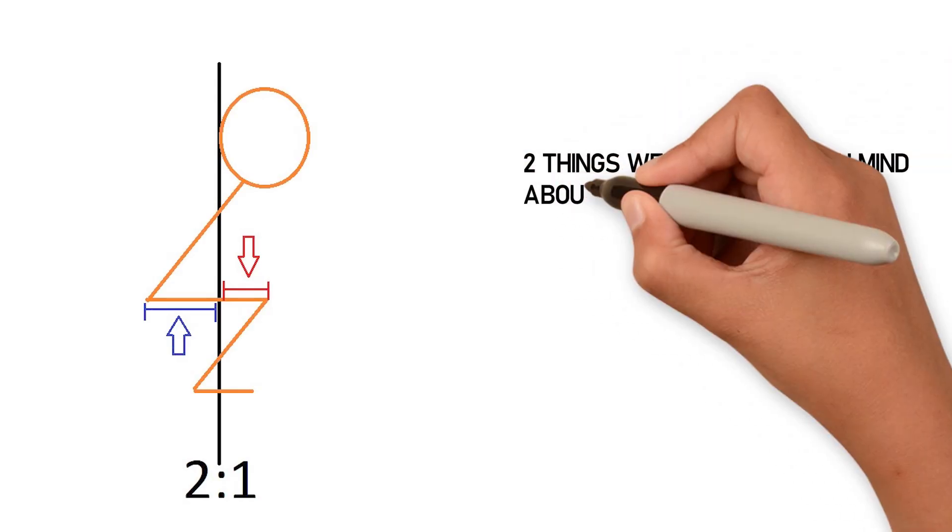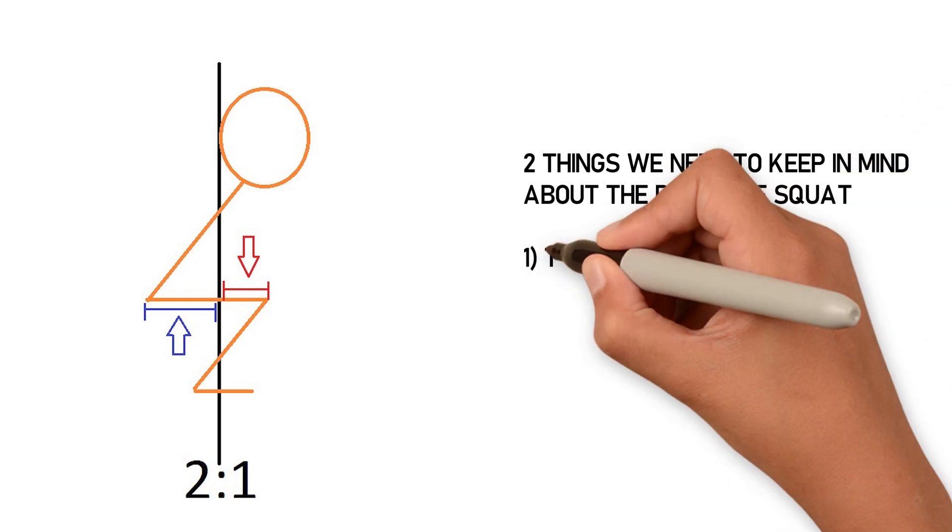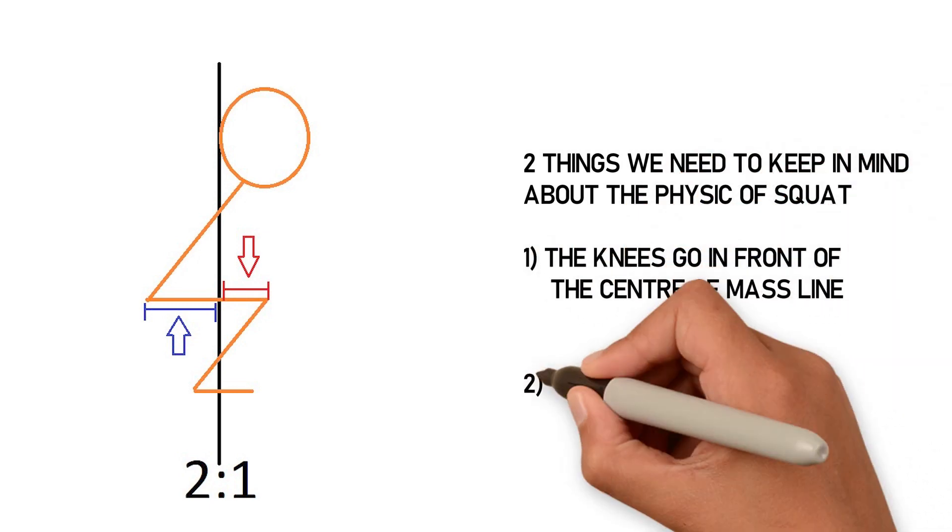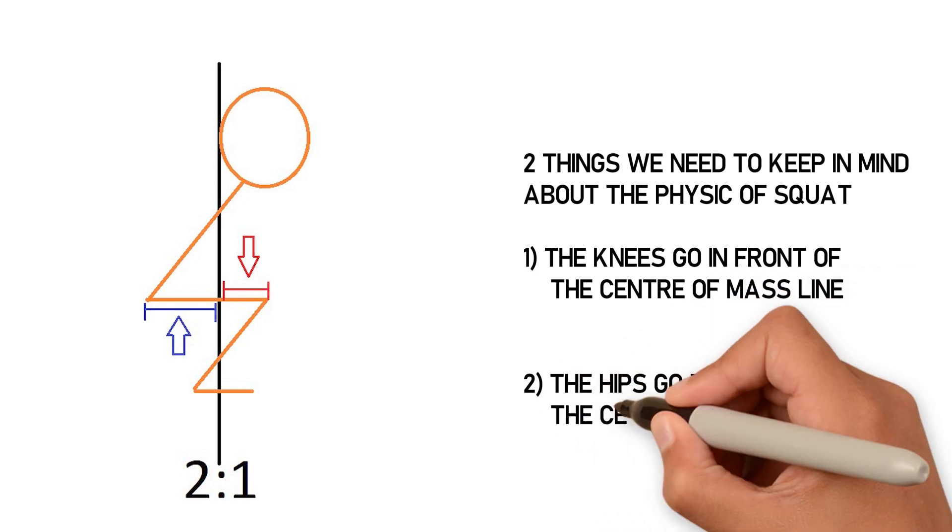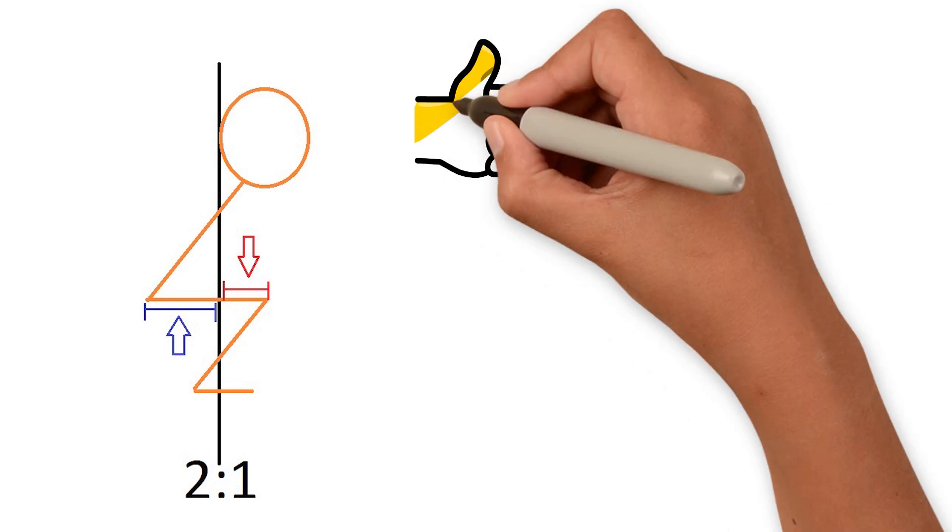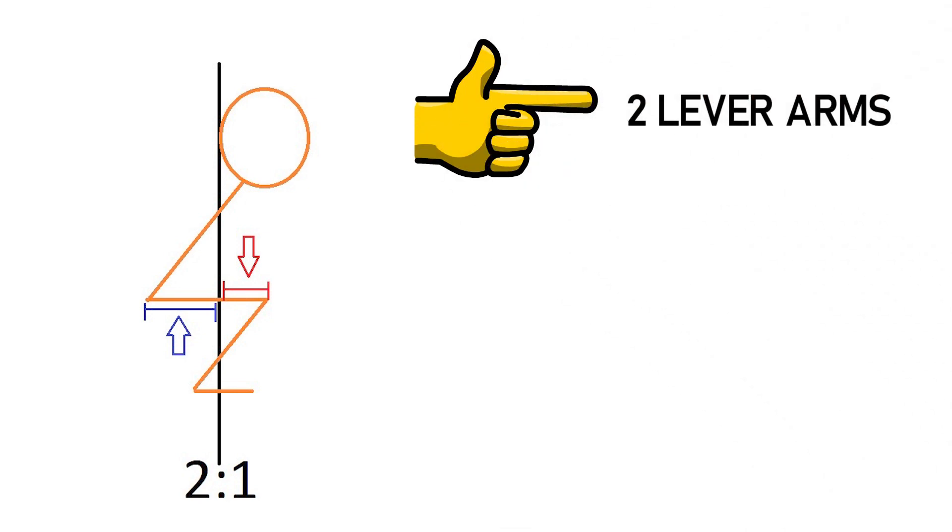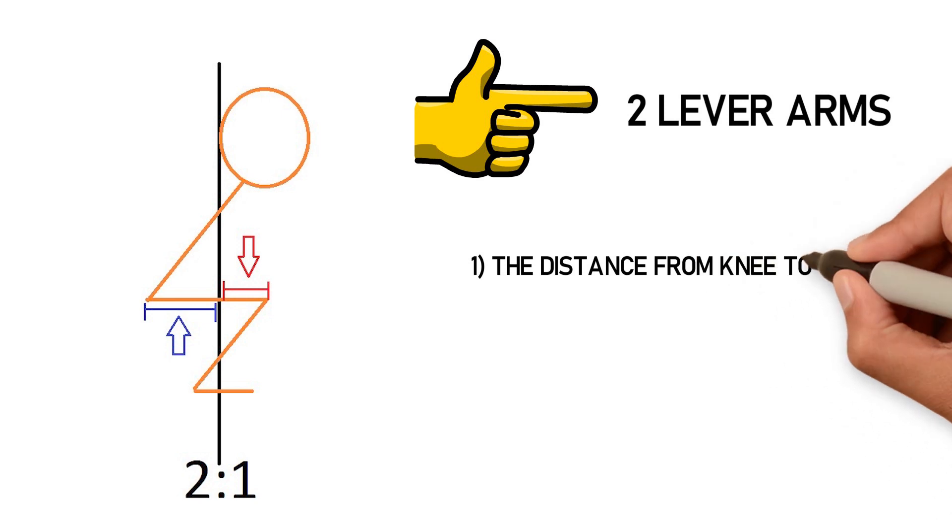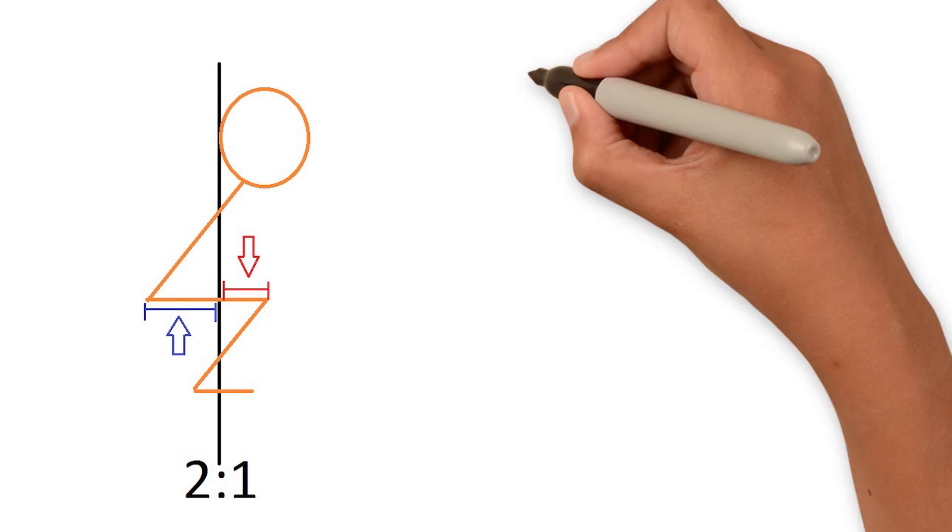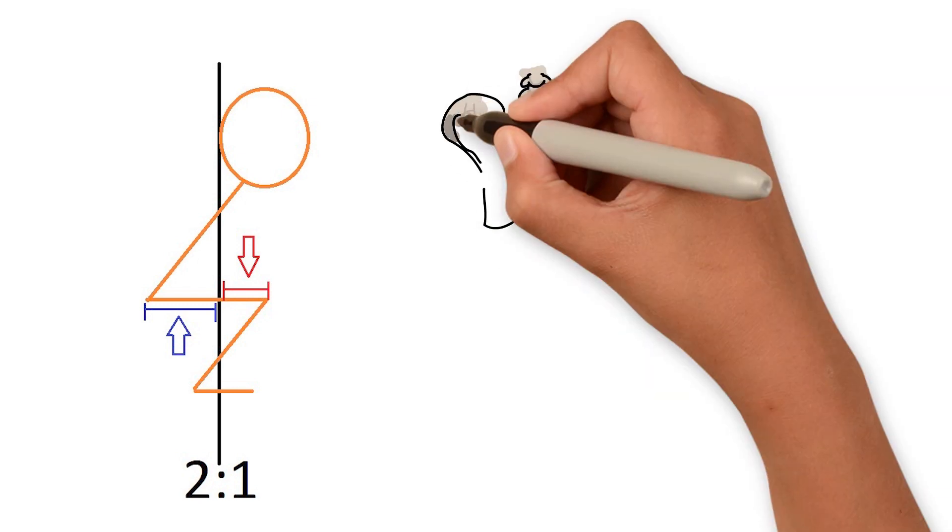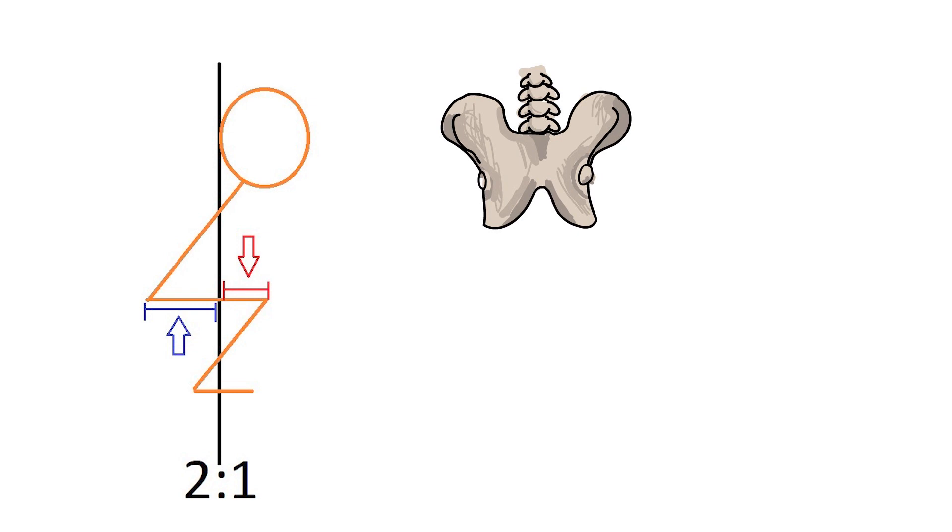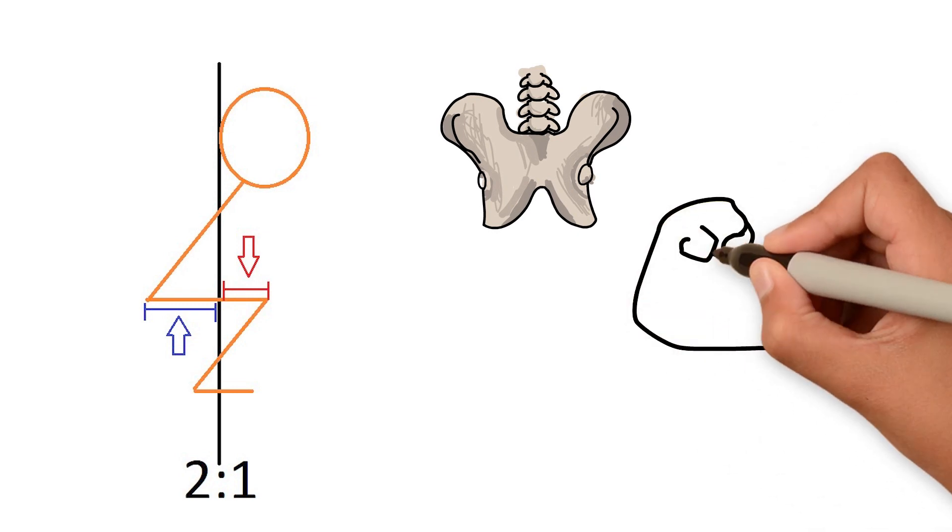Two things we need to keep in mind about the physical squat is that the knee goes in front of the center of mass line and the hip goes behind the center of mass line. By doing this, it creates two lever arms. The distance from the knee to center and the distance from the hip to center.